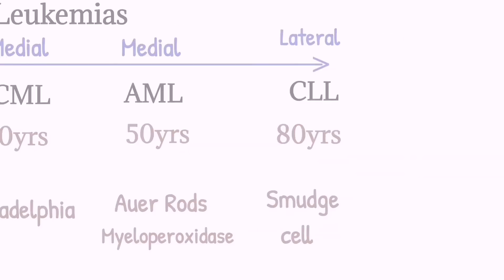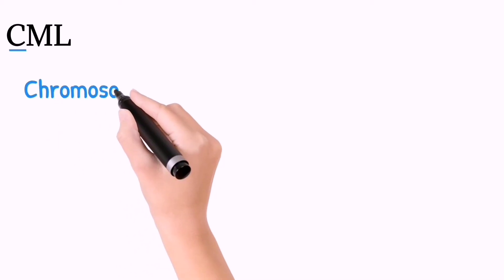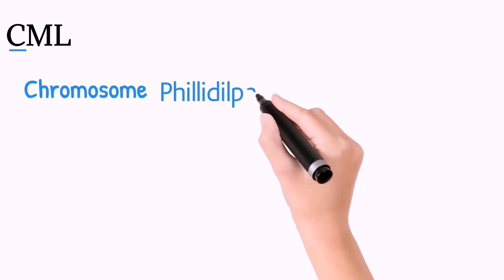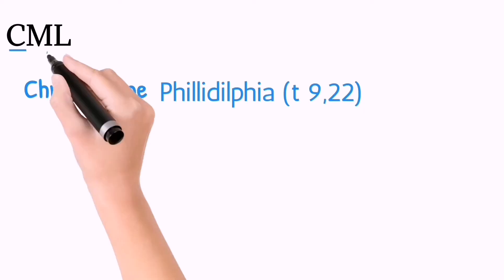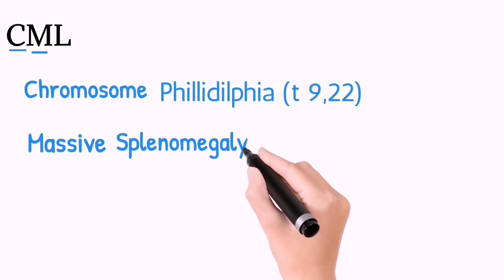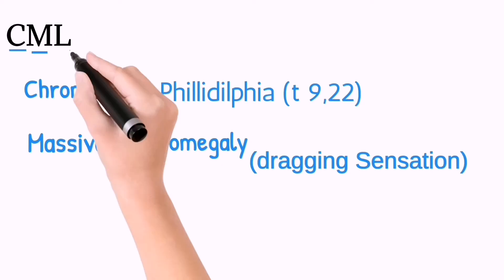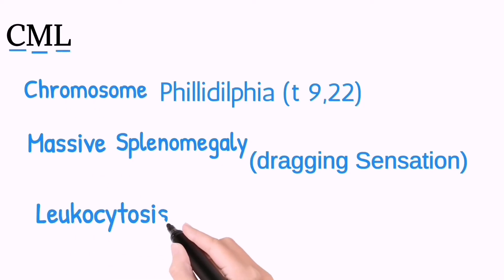In CML: C is for Chromosomes — the Philadelphia chromosome, which is a translocation between chromosomes 9 and 22. M is for massive splenomegaly, and absence of lymphadenopathy is again a very diagnostic feature of CML. L is for leukocytosis, that is raised TLC on CBC.